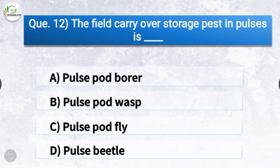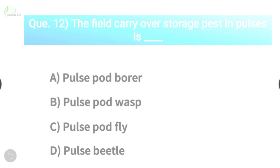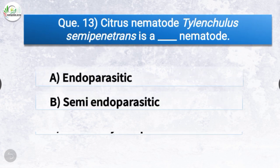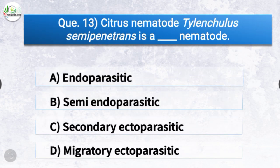Question number twelve: The field carryover storage pest in pulses is? The options are pulse pod borer, pulse pod wasp, pulse pod fly, or pulse beetle. The correct answer is option D, pulse beetle — the field carryover storage pest in pulses is pulse beetle.